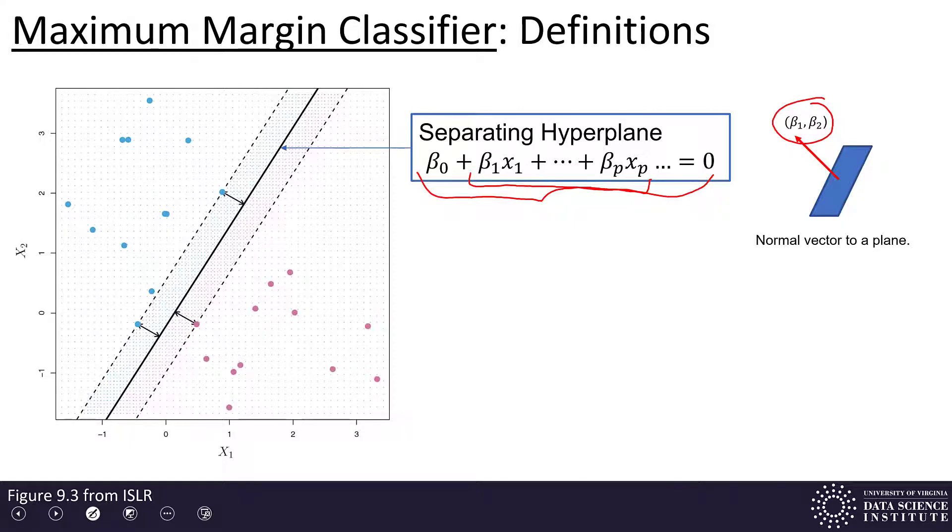And if we're in three dimensions, you'd need, of course, three betas here: beta 1, beta 2, beta 3. What does it mean to be normal? That means if you look at this vector, it's perpendicular to the plane in any direction. It forms a 90 degree angle to the plane in all directions around the plane.